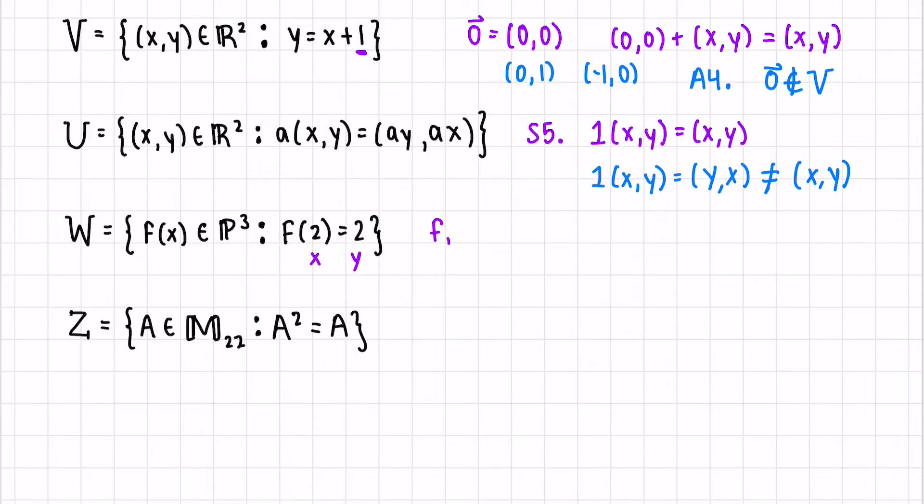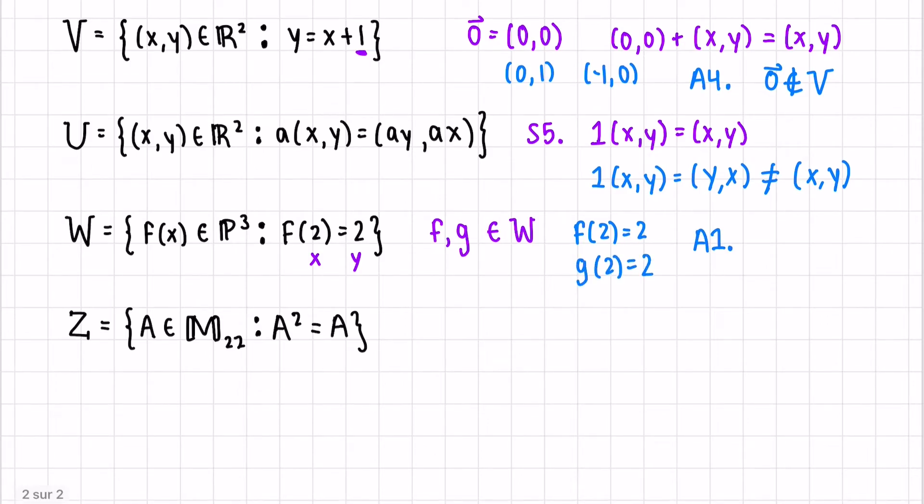Let's say that f and g are two functions that are included in W. So that means they have the property f(2) equals 2 and g(2) equals 2. Let's look at A1 closedness under addition. If we add f(2) plus g(2), what do we get? Of course, we get 4, right?